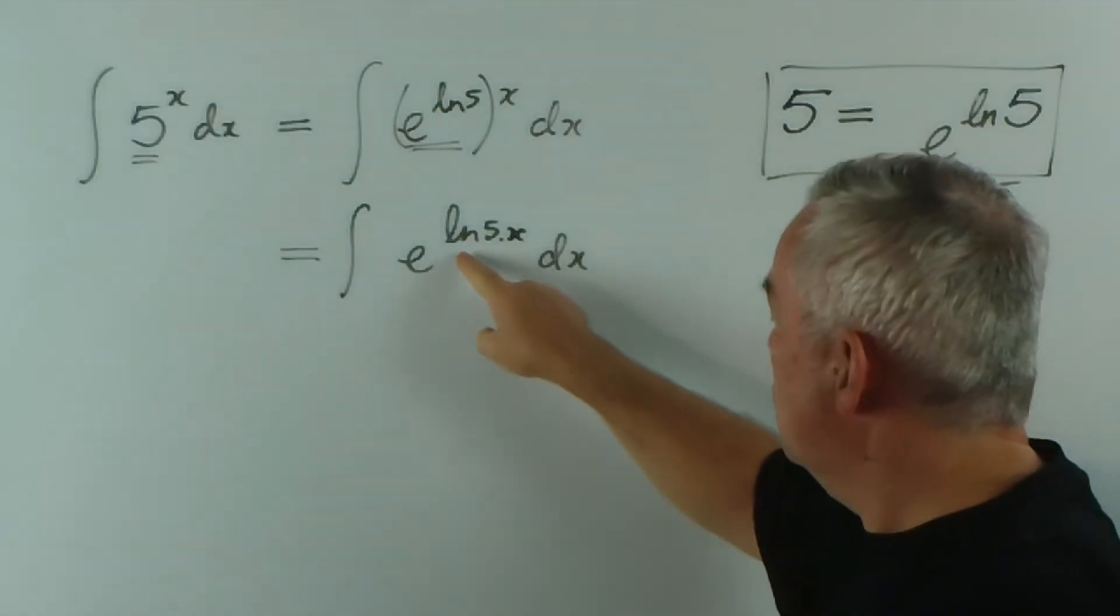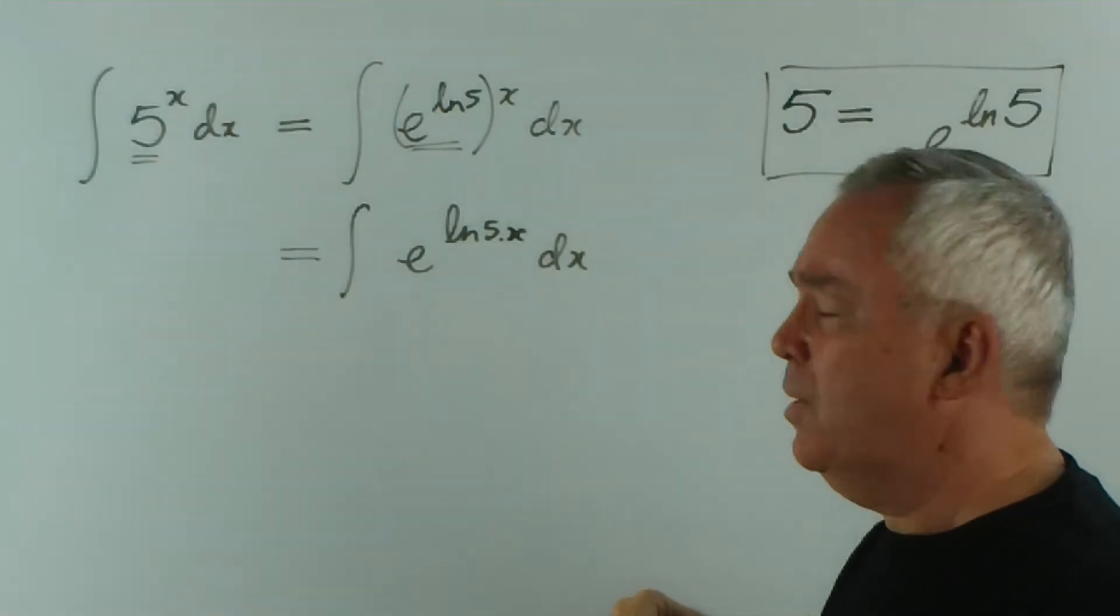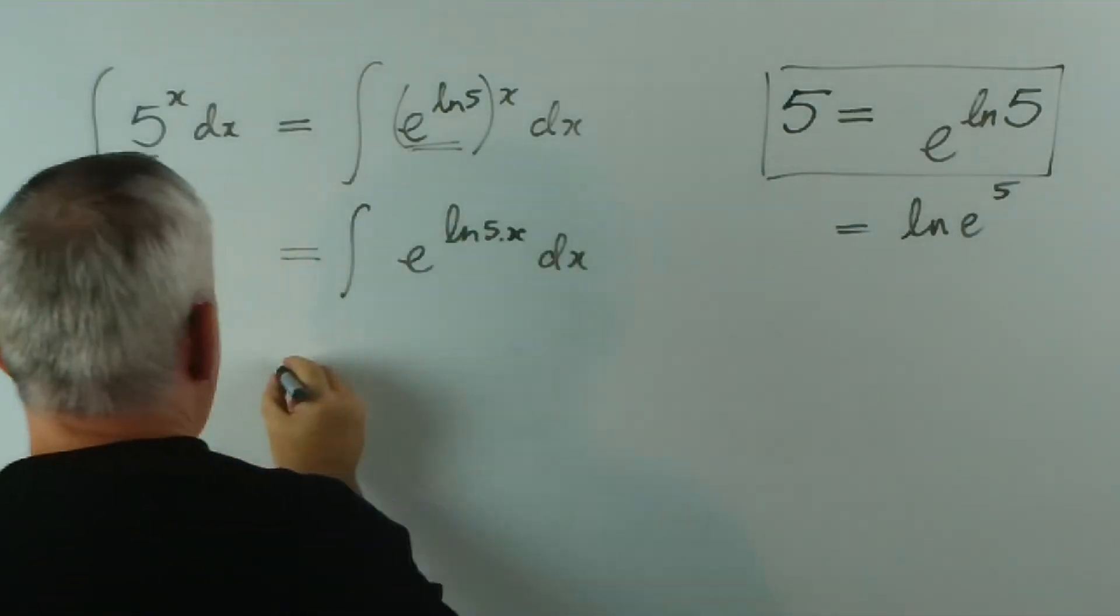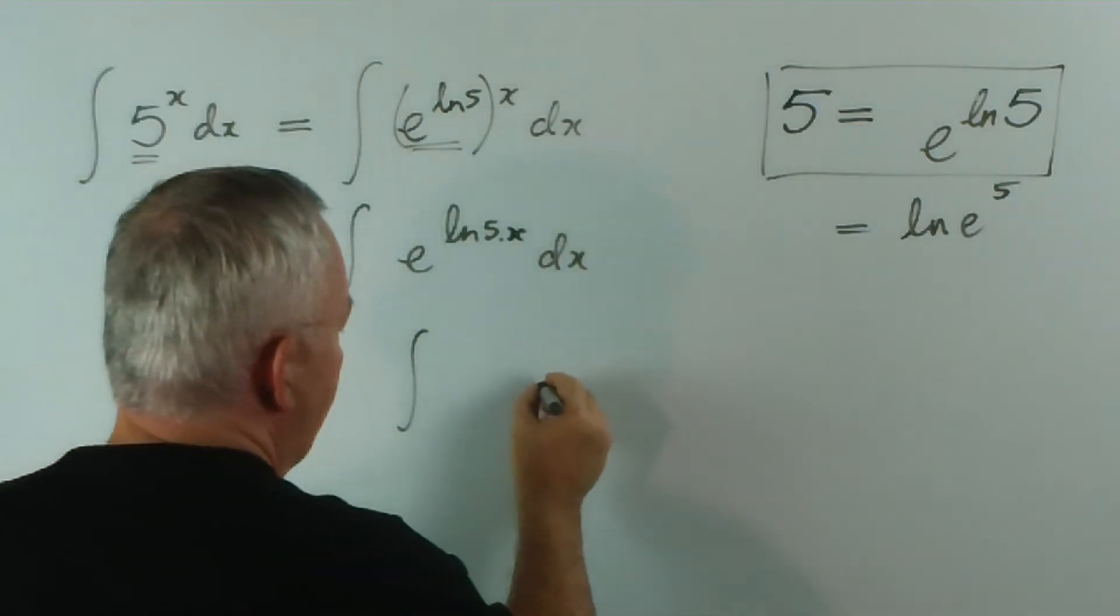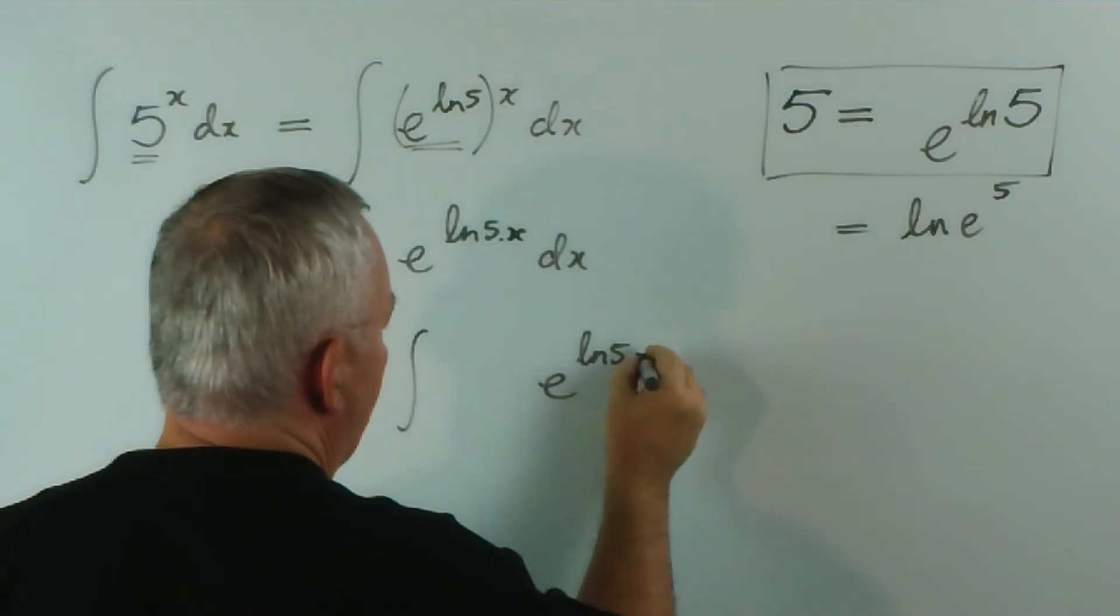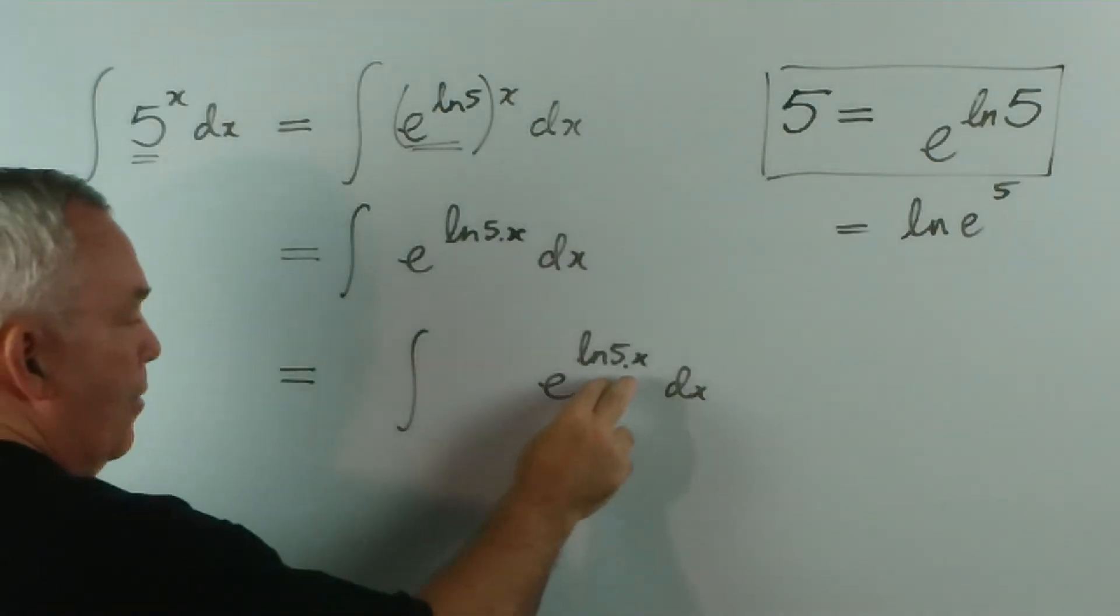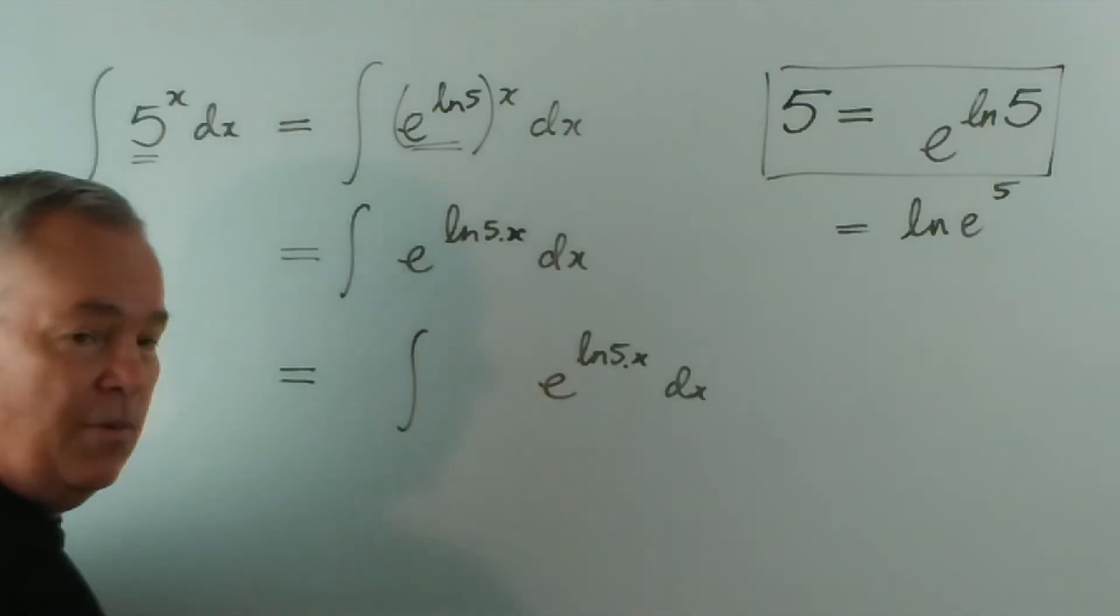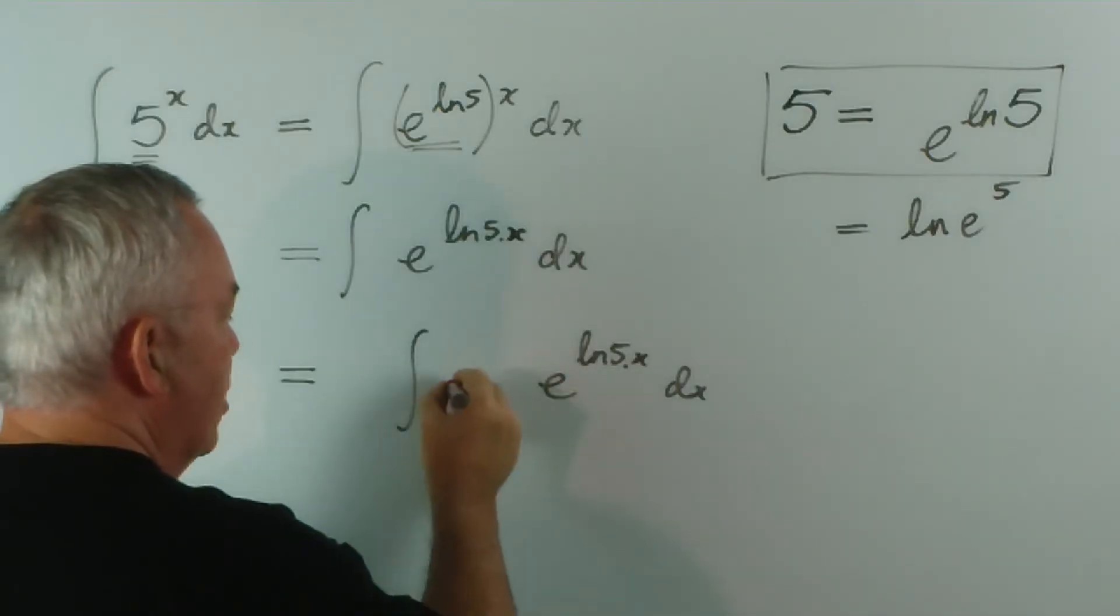Now how do we perform it? We could substitute u for that. But I think you're seeing by now that for a lot of these simple ones, I'm trying to follow a pattern. And the pattern is this: that if you have e to a function of x, then we want, in our pattern, to have the derivative of this here. Now the derivative of that, since log 5 is just a constant, it's just like 2x or 3x or 7x, the derivative of this is log 5.